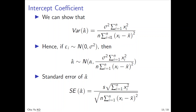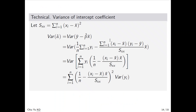Now we show why the variance of alpha-hat has this complicated form. To save notation, we denote S_xx as the sum of squared deviations: the sum of (x_i minus x-bar) squared. We know alpha-hat equals y-bar minus beta-hat times x-bar. And y-bar equals the sum of y_i over n. Beta-hat equals the sum of (x_i minus x-bar)(y_i minus y-bar) divided by S_xx.